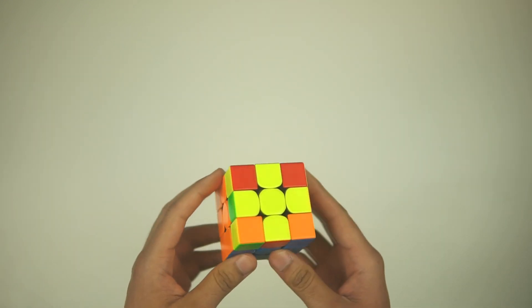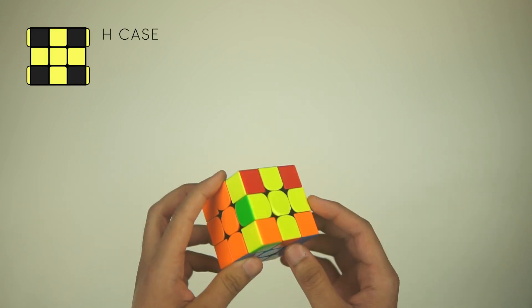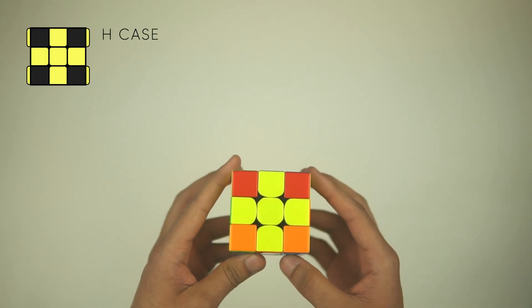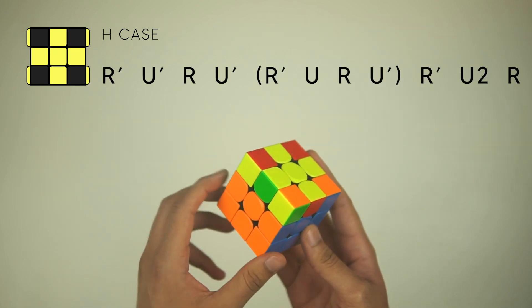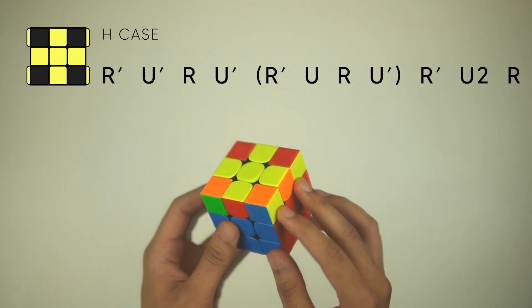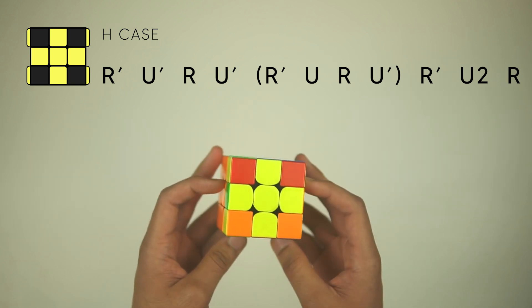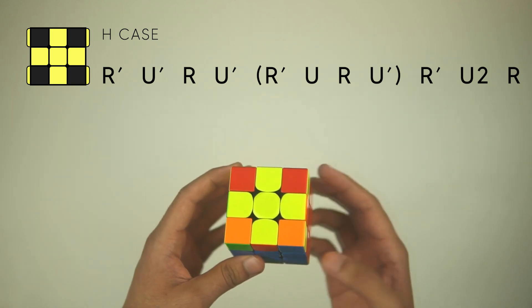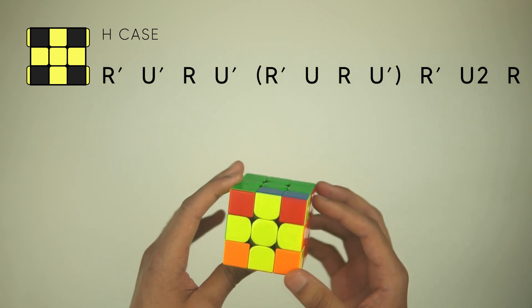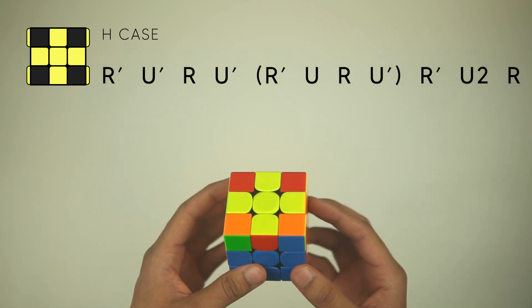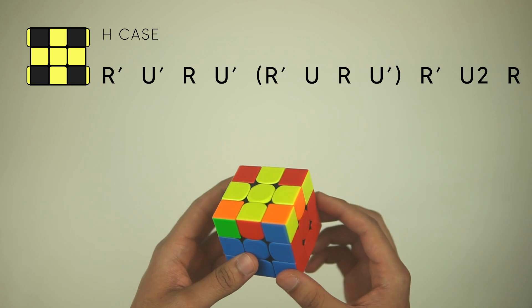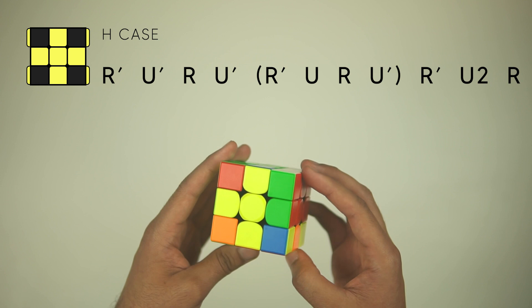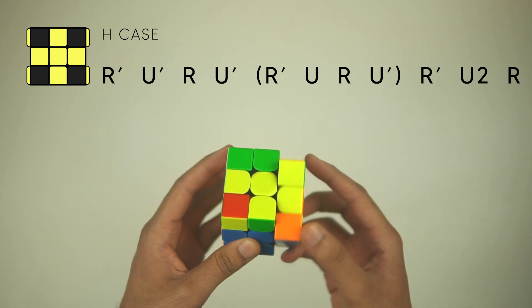Moving on to the H case, I'm not sure why it's called this, maybe because it kind of looks like an H, but you don't have any yellow corners solved on the top. But you notice you have these two yellow headlights on the left and on the right. So headlights, headlights, nothing on the top, that's the H case. To solve this, the algorithm is kind of similar to the anti-Sune case. It's actually exactly the same as the anti-Sune, but with four extra moves in the middle. We're going to do an R', U', R, U' to take this F2L pair out and move it over one.